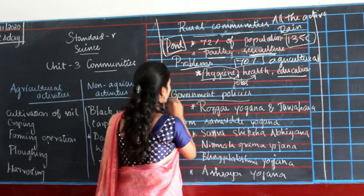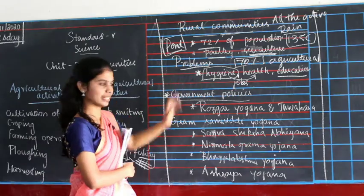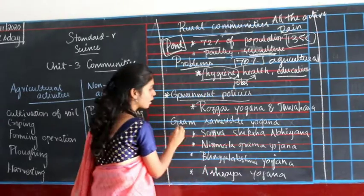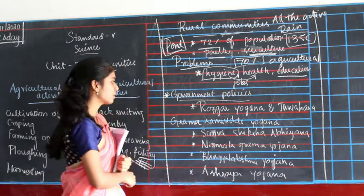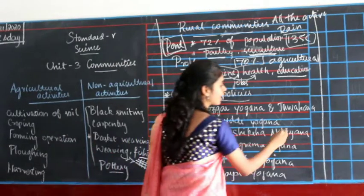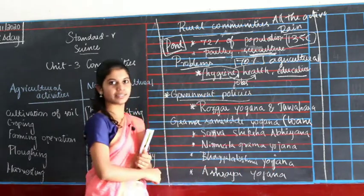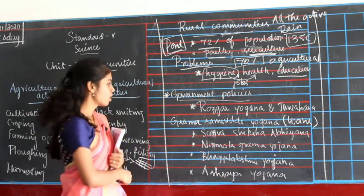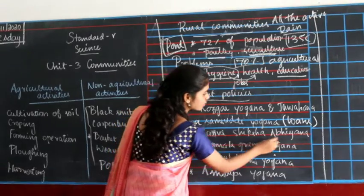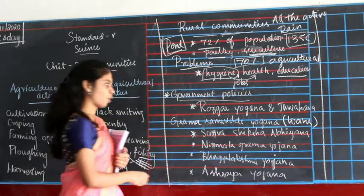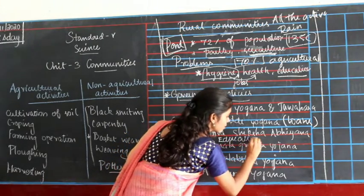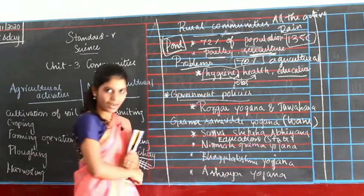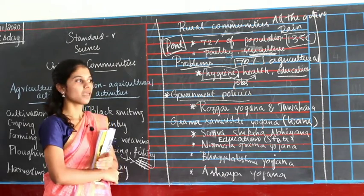What are the policies given by the government to overcome these problems in rural communities? The first ones are Rojgar Yojana and Jawahar Gram Samridhi Yojana. These two policies provide loans to educated people in villages for the ideas and things they want to do. Then Sarva Shiksha Abhiyan — this is done in collaboration with the state government to provide quality education to all people living in rural communities.